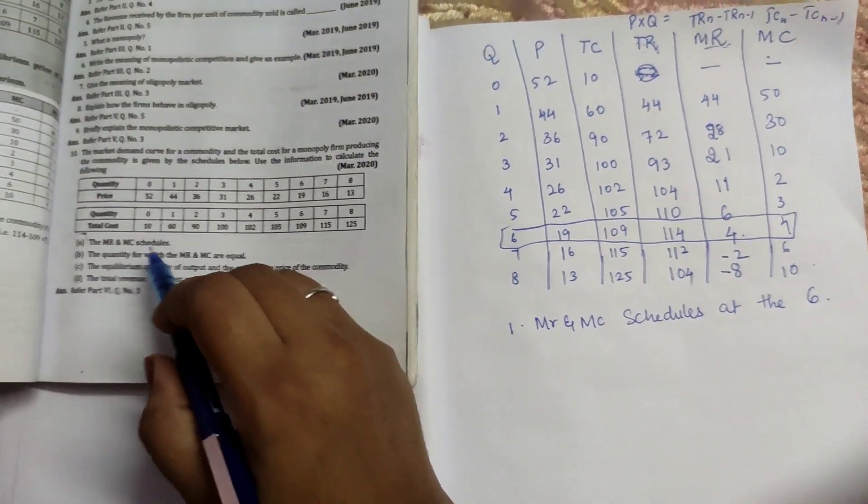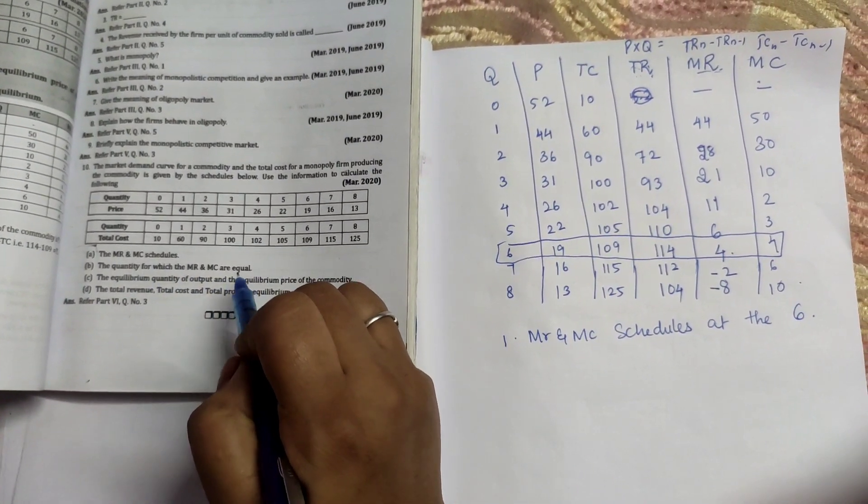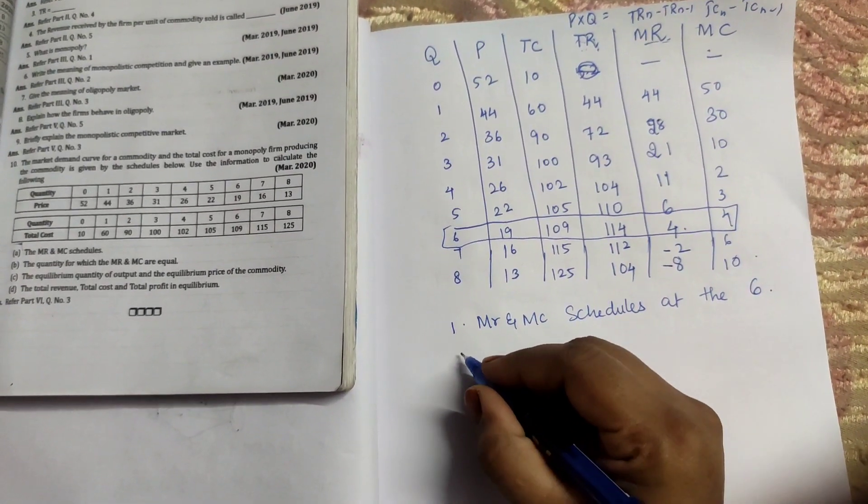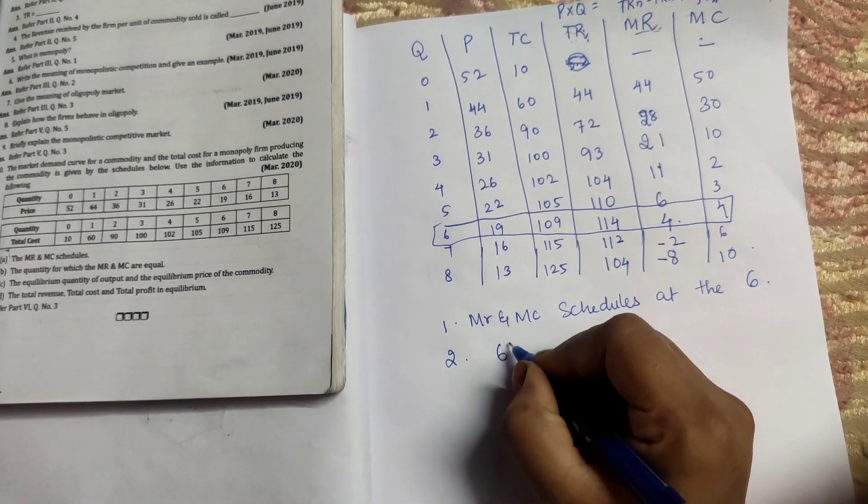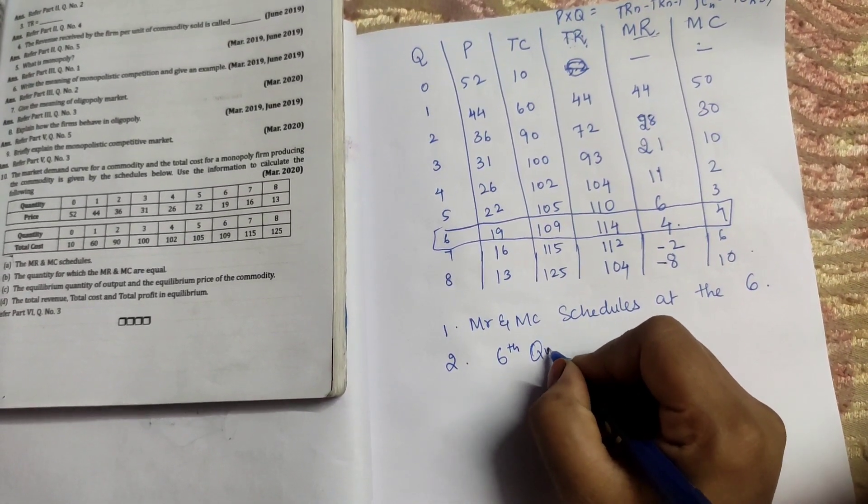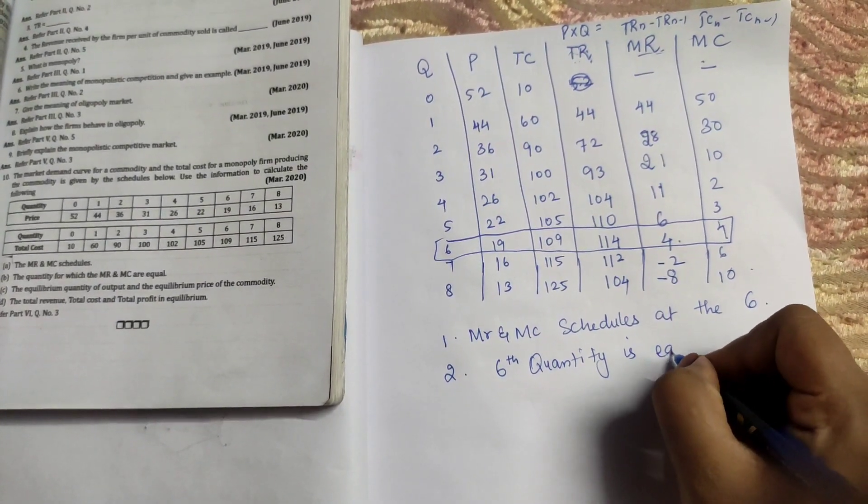What is the second question? The quantity for which MR and MC are equal. The quantity for which MR and MC is equal is again the sixth quantity, where MR and MC is equal.